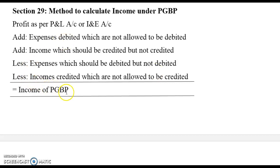The result equals your income under PGBP. This is a very simple format under Section 29: take the profit figure from your P&L account or income and expenditure account, then deal with expenses and incomes accordingly — expenses reduce profit, incomes increase it.